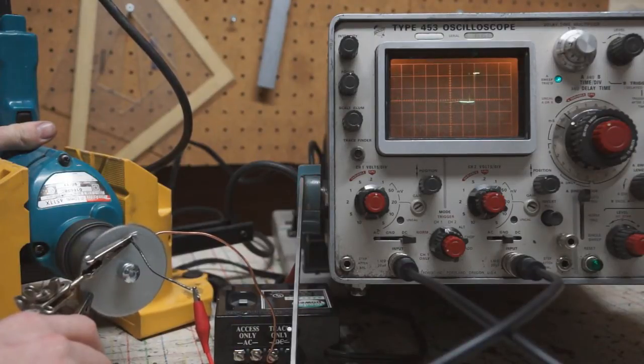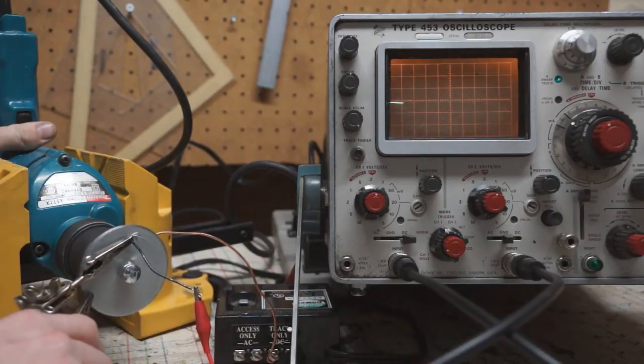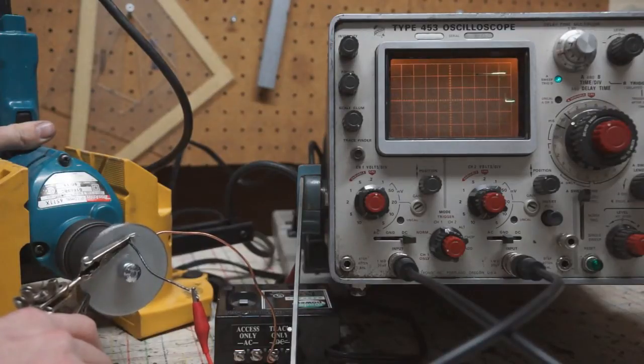You can use the length of the pulses or the frequency between each rising edge to determine how fast this disc is rotating. This gives you a pretty good measurement of the speed.